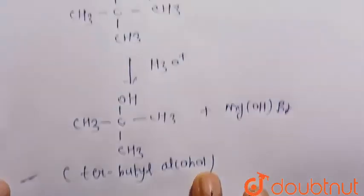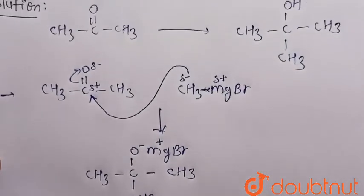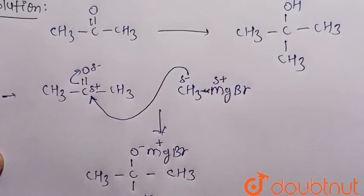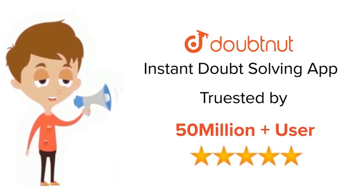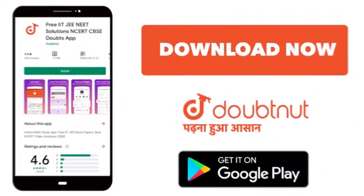This is the required method of preparation of tertiary butyl alcohol from acetone. Thank you. For class 6-12, IIT-JEE and NEET level, trusted by more than 5 crore students. Download Doubtnet app today.